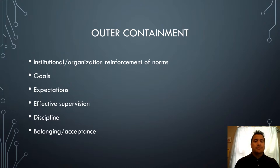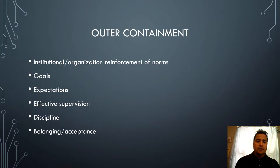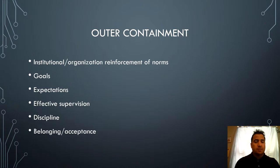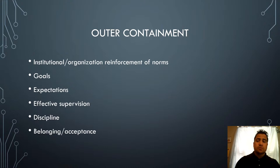Belonging and acceptance is another outer containment factor. Does the person working for you feel a sense of belonging in the community and culture within the business? Do employees come in and feel like an outcast, or do they have belonging and acceptance? All these things in the environment around you affect whether or not you will adhere to cultural norms.